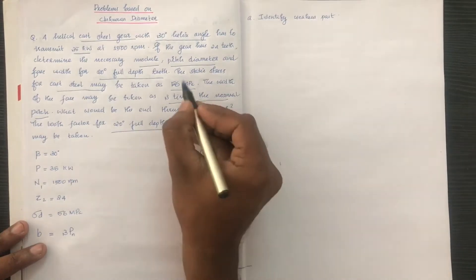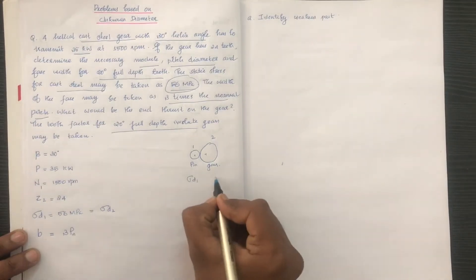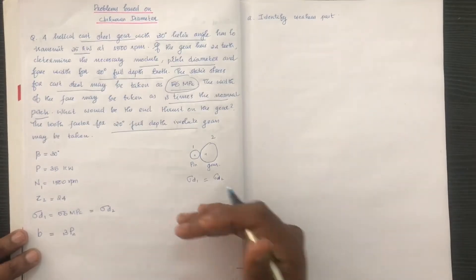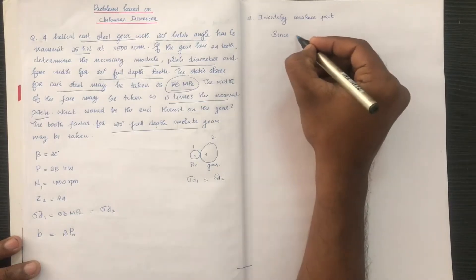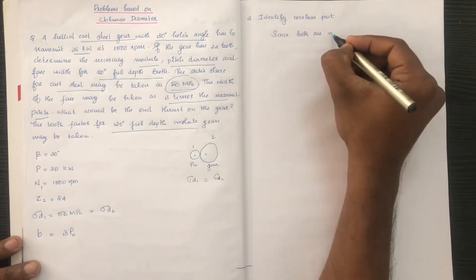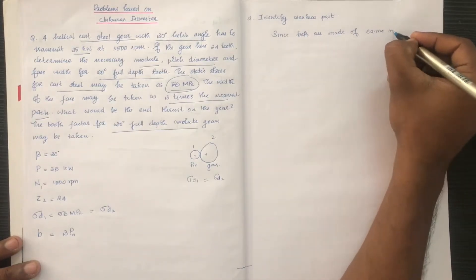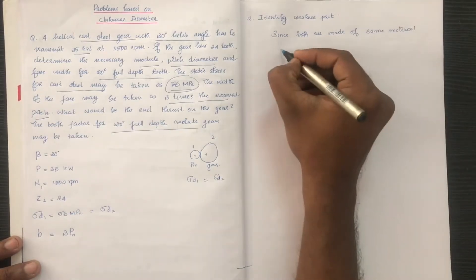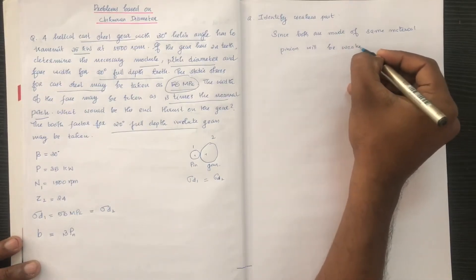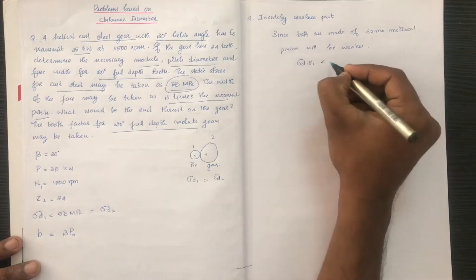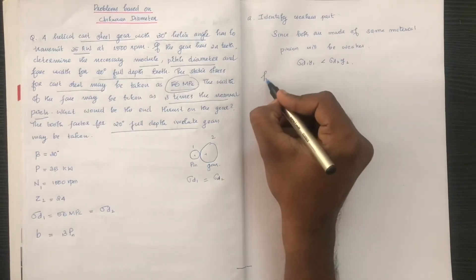Since both parts use the same material, sigma D1 equals sigma D2. We compare sigma D1 times Y1 versus sigma D2 times Y2. Because they share the same material, the pinion will be weaker.